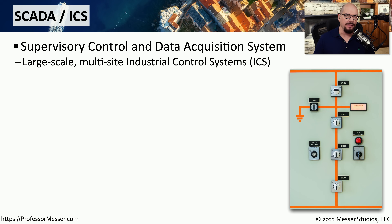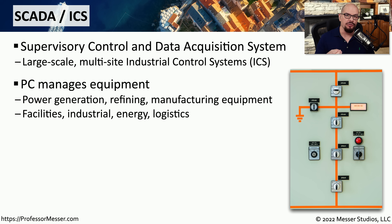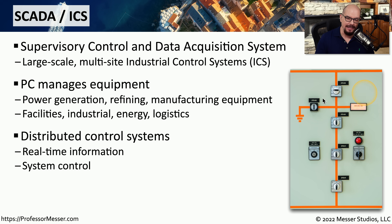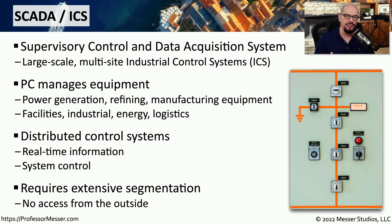If you work in an industrial environment, you're probably familiar with SCADA or ICS — the Supervisory Control and Data Acquisition System, also referred to as an Industrial Control System. SCADA systems are responsible for control and management of industrial machines, such as power generation equipment at a power company or large manufacturing equipment. SCADA allows us to see exactly what's happening on these devices and manage and control them across the network. Because these systems can be very expensive and an outage might have a dramatic impact, SCADA systems are usually segmented from the rest of the network, and you often need additional rights, permissions, and connections to gain access to them.